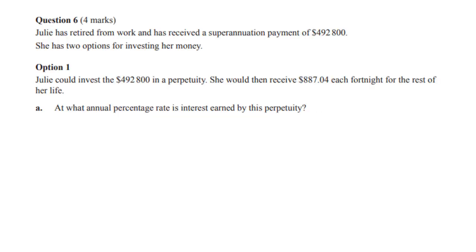Again this is from the 2018 past exam paper. So Julie has retired from work and received a superannuation payment of $492,800 and she's got two options. I'm just going to show you option one because this is the first part.